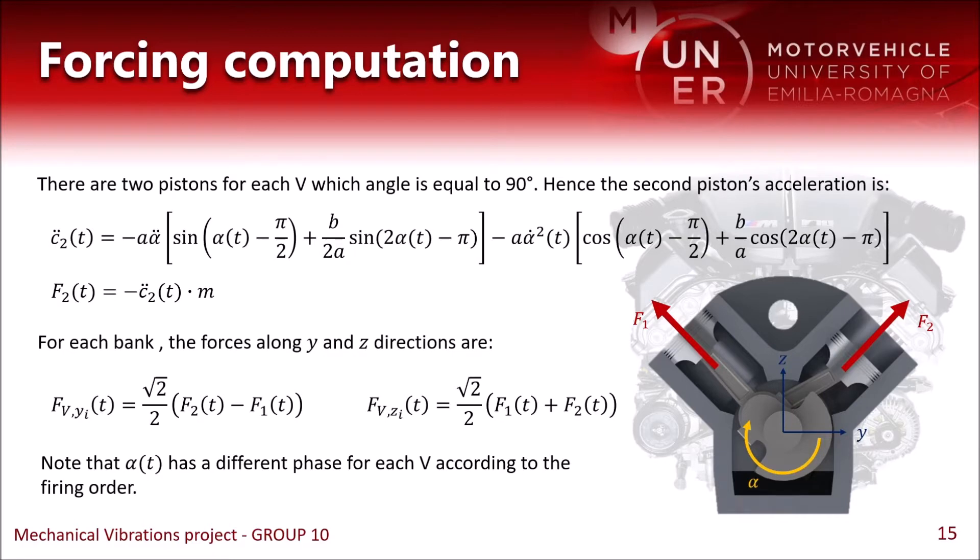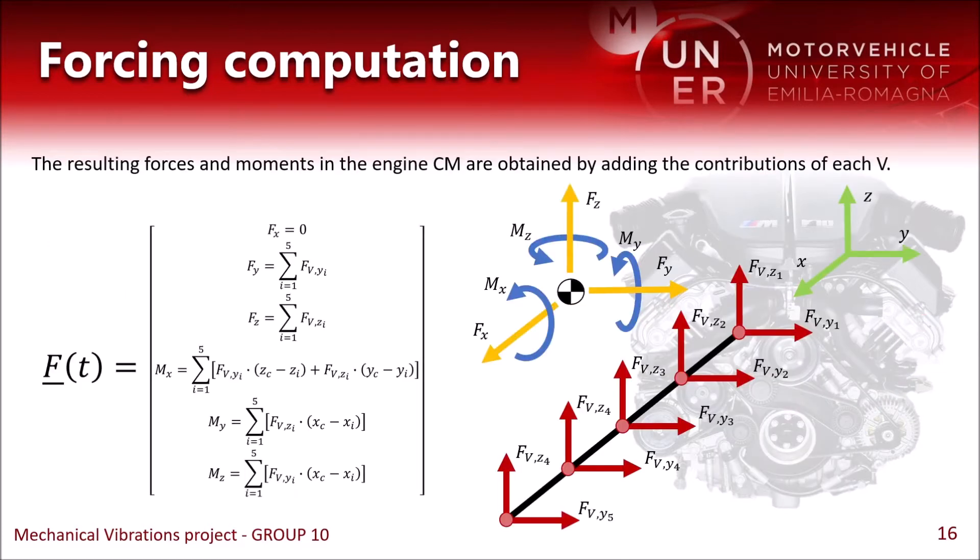We move on to study a pair of pistons for each V. We have no forces in the x direction, and we sum the forces for the y and z directions. Then we sum the contributions of each V to obtain the total forces on the engine. We transport these to the center of mass, and we also obtain three moments.